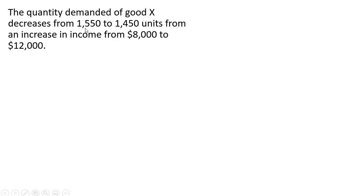Here the quantity demanded of good X decreases from $1,550 to $1,450 from an increase in income from $8,000 to $12,000. So here we have an increase in income, but people are actually buying less of this good. So this will be an inferior good.